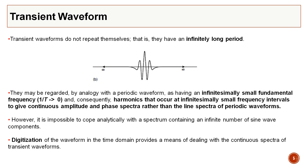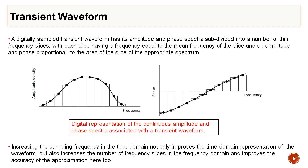It is nearly impossible to cope with a continuous spectrum directly. The only way is to digitize your waveform to deal with the continuous spectrum of transient waveforms — that's how we deal with seismic data through digitization. We subdivide into a number of thin frequency slices, with each frequency equal to the mean frequency of the slice, and the amplitude and phase proportional to the area of the spectrum.